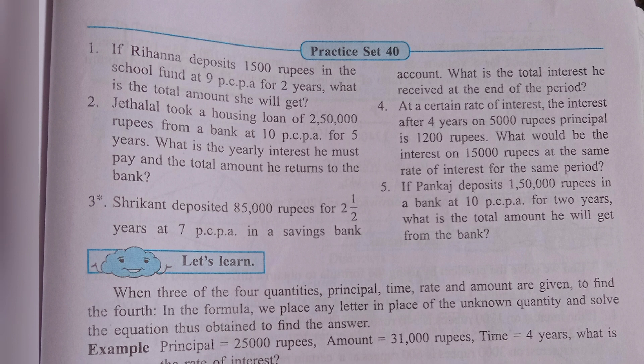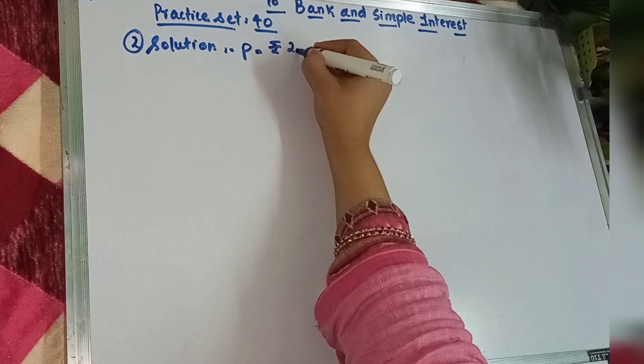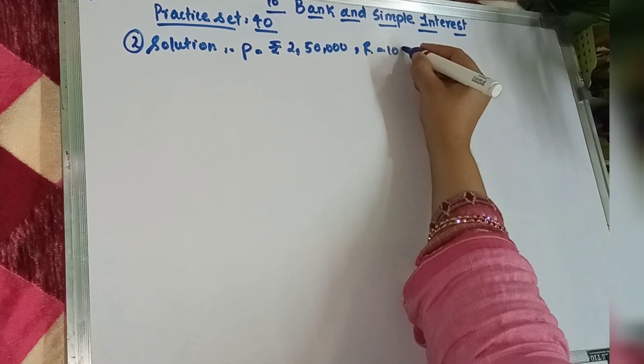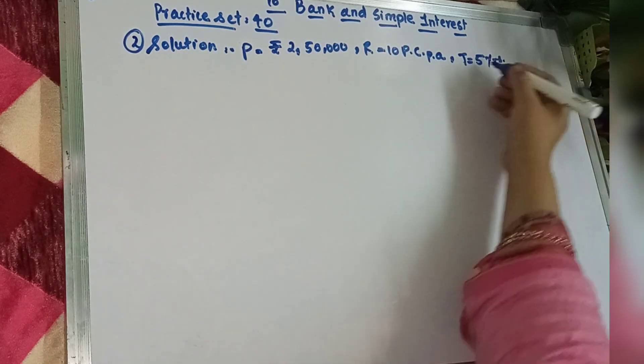Second question. Jethalal took a housing loan of Rs. 250,000 from a bank at 10 PCPA for 5 years. What is the yearly interest he must pay and the total amount he returns to the bank? Question number 2 mein, humko principal 2,50,000 diya hai. Rate hai 10 PCPA aur year hai 5 years.